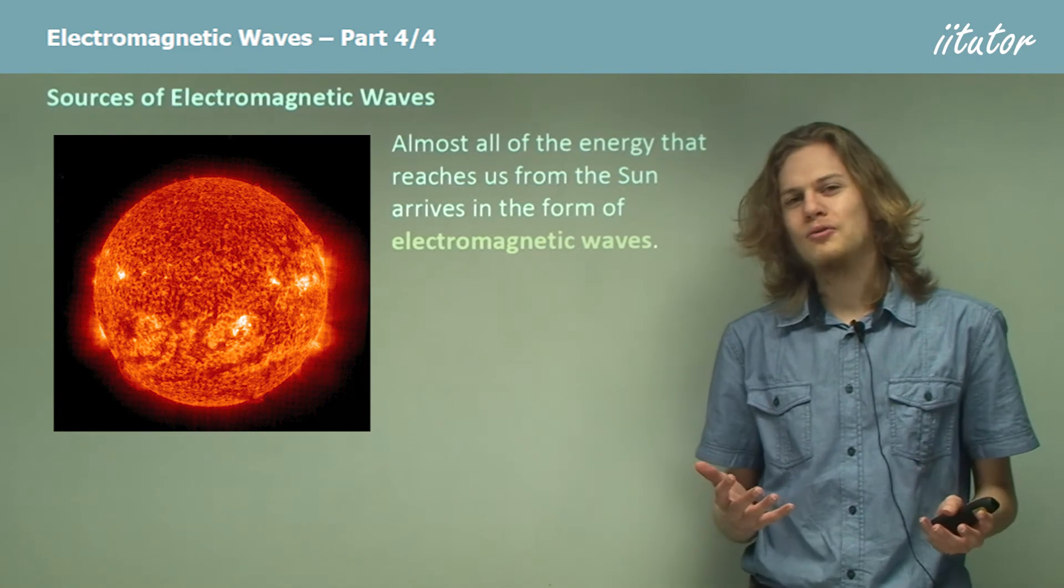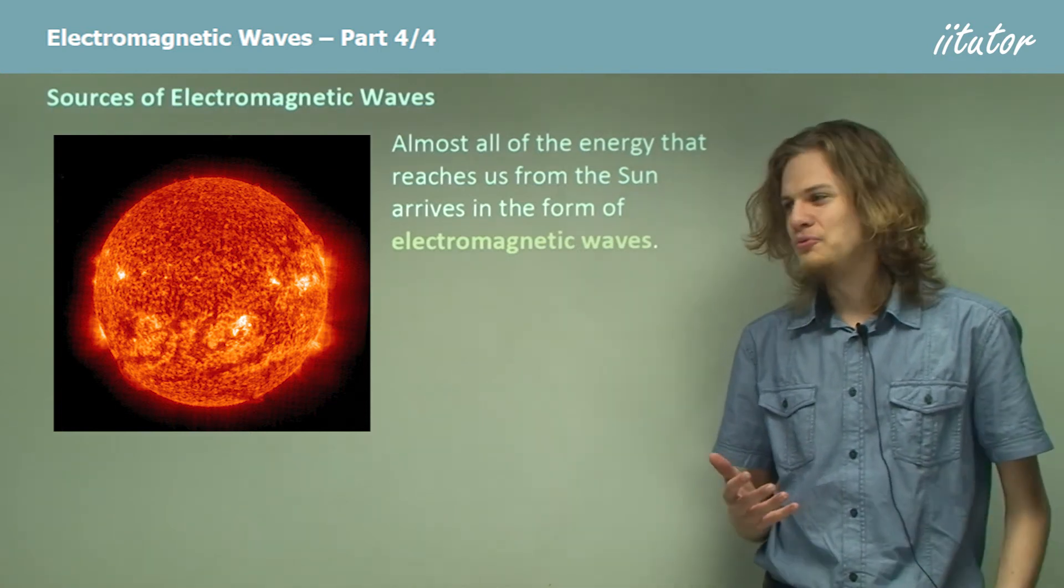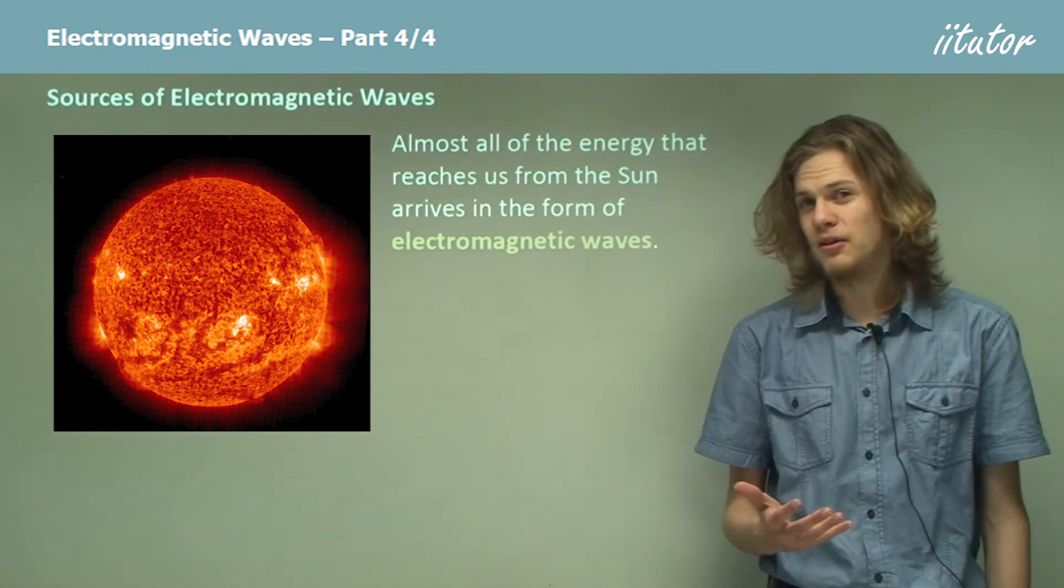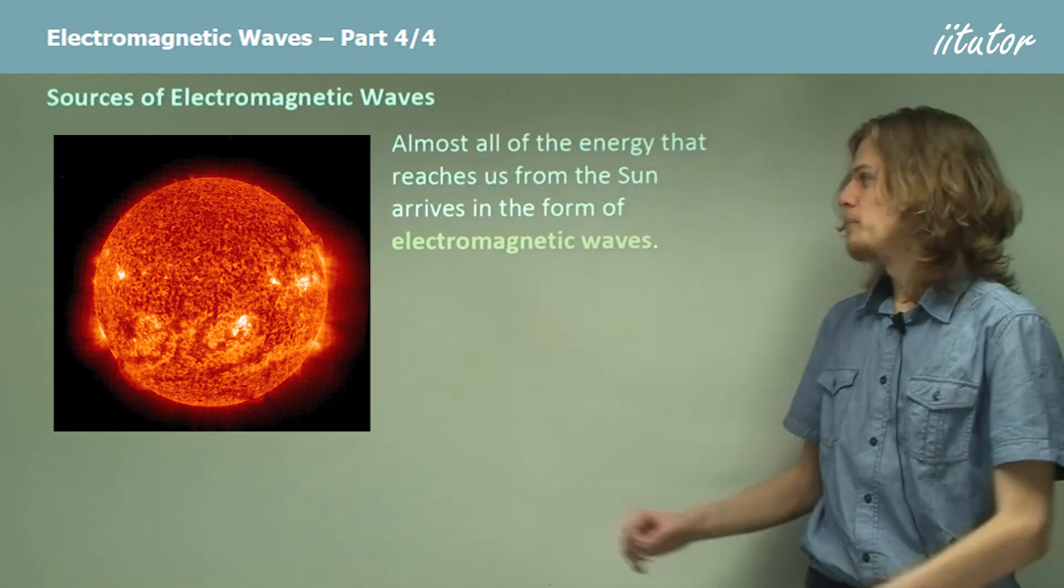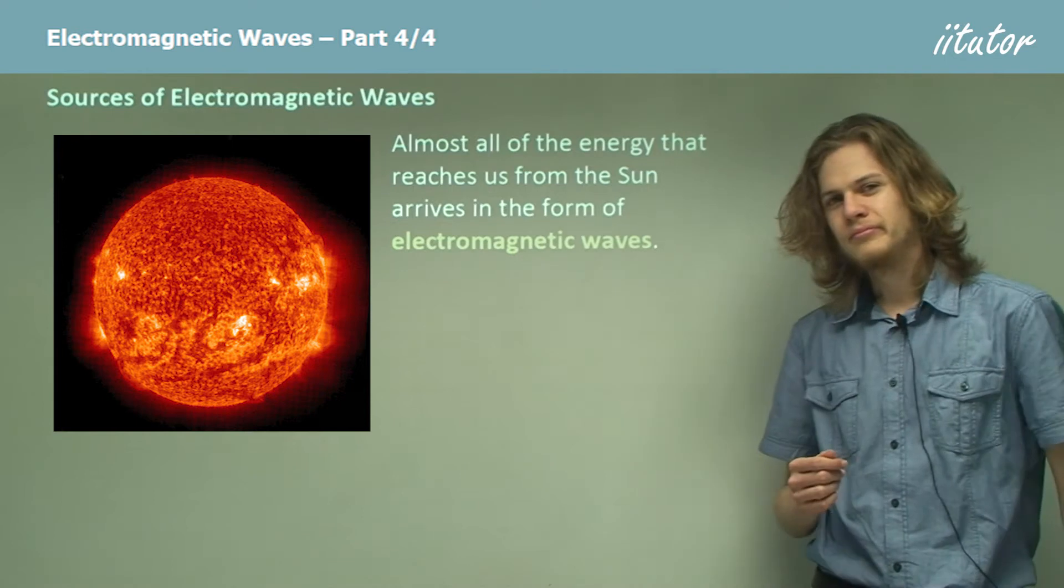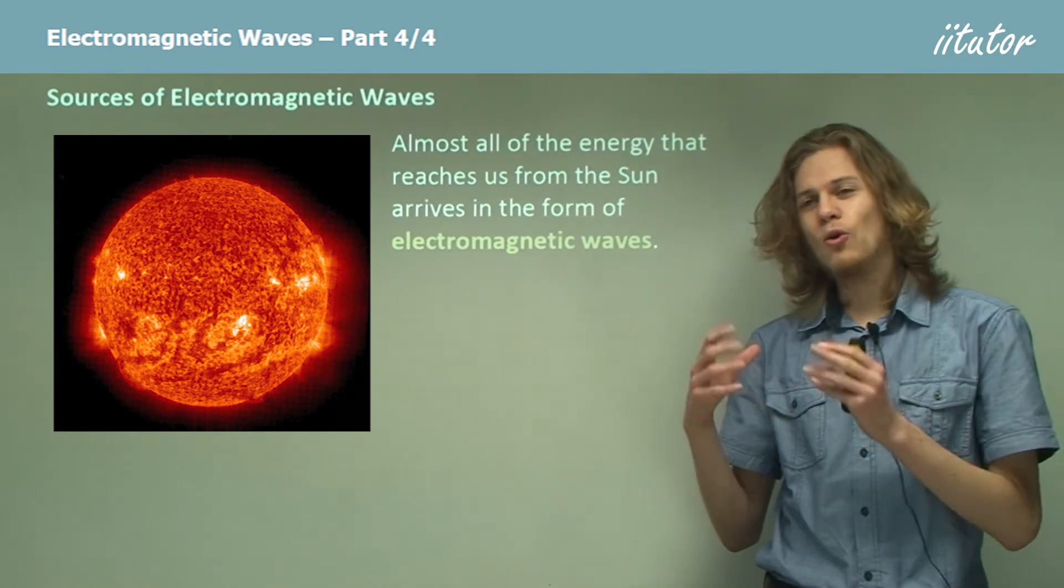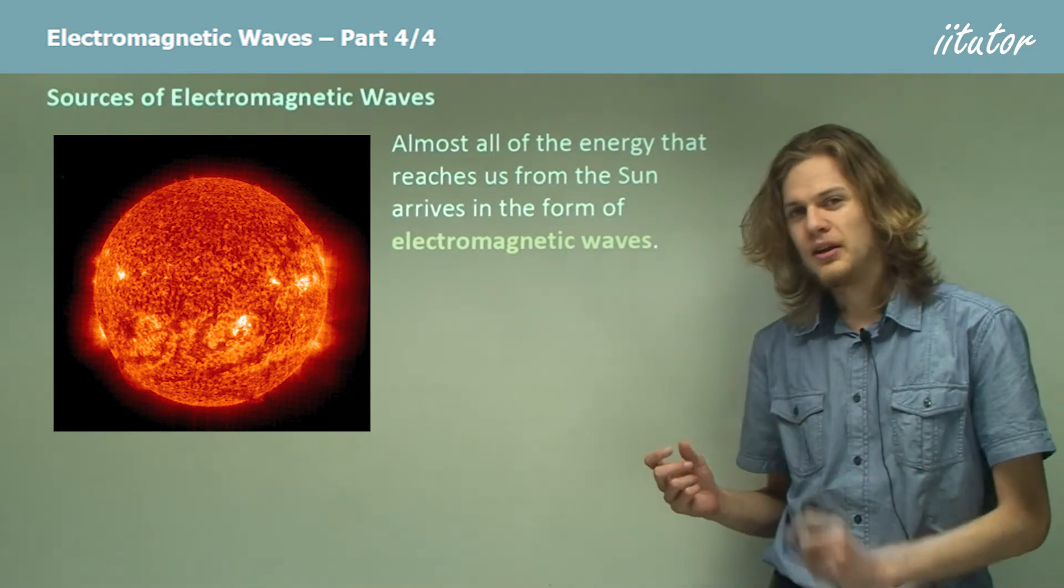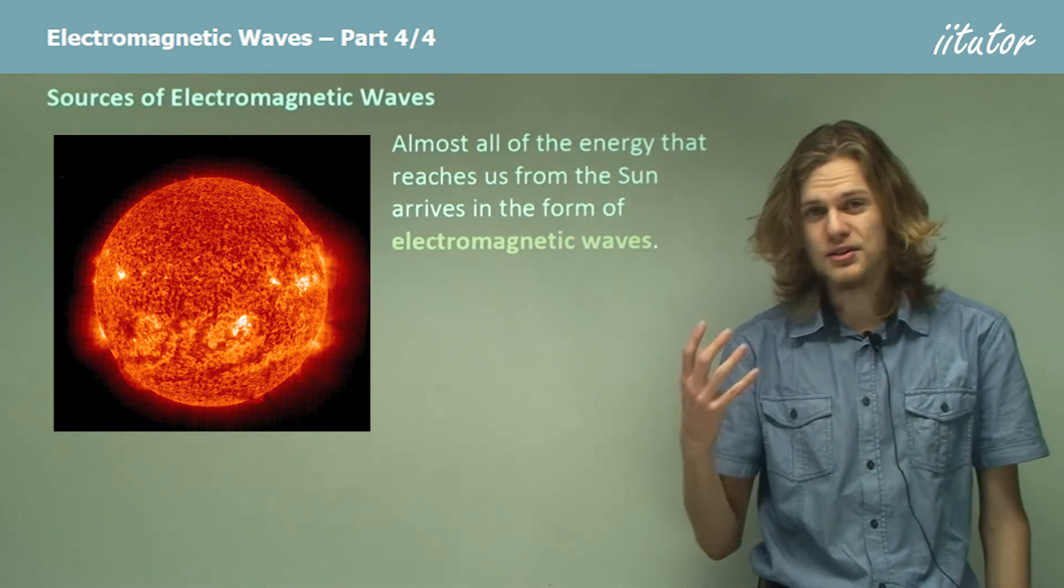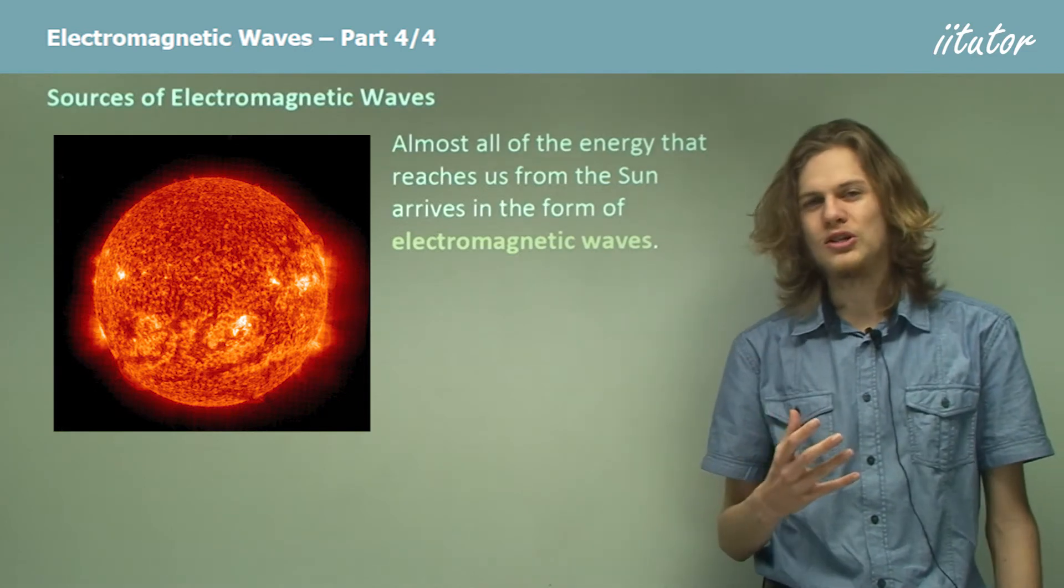Where do electromagnetic waves come from? Well, obviously if we make a light source, we can produce them ourselves, but most of the electromagnetic waves on Earth originate from the Sun. In fact, just about all the energy that reaches us from the Sun comes in the form of electromagnetic waves because these can travel through space even if there's no medium through which to propagate.